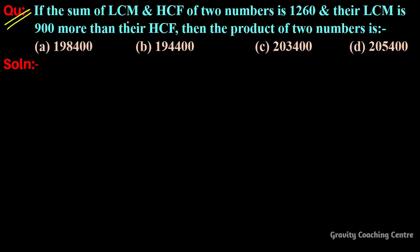Question: If the sum of LCM and HCF of two numbers is 1260 and their LCM is 900 more than their HCF, then the product of two numbers is? In this question, the sum of LCM and HCF is 1260 and LCM is 900 more than its HCF.